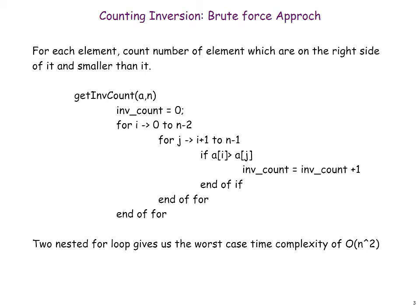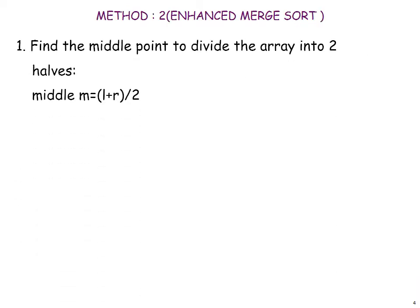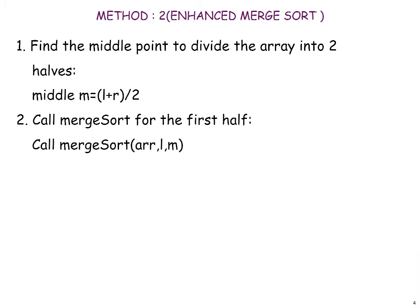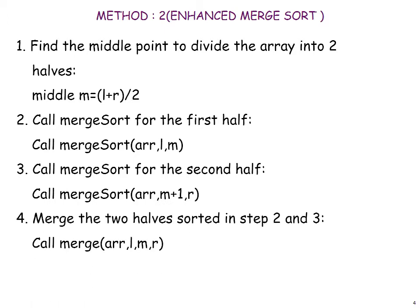Now we will look at a solution to count the number of inversions in an array using merge sort. We will quickly recapitulate the original merge sort algorithm. Merge sort works on the divide and conquer paradigm — we recursively divide the given problem into smaller subproblems until they become simple enough to be solved directly. Then solutions of the subproblems are combined to give a solution to the original problem. Given an array we divide it into two halves, call merge sort on each half, and then merge them.